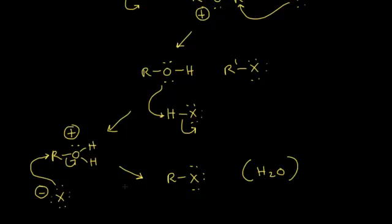I drew this second part of the mechanism like an SN2 mechanism, and it would be an SN2 mechanism if we were starting with a primary alcohol. A primary alcohol would work best for an SN2 mechanism because of decreased steric hindrance. However, if we were dealing with something like a tertiary alcohol at this point, things would likely proceed via an SN1 type mechanism. So it's important to look at the structure of the alkyl halide.